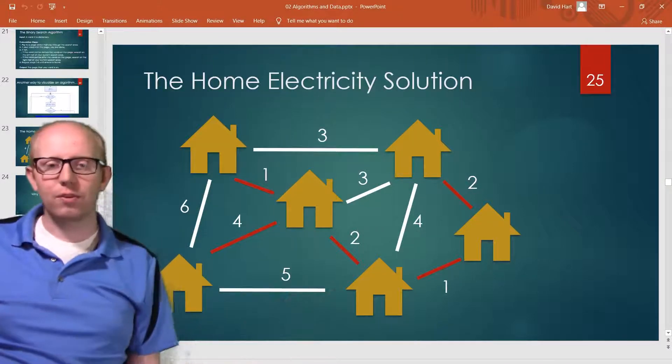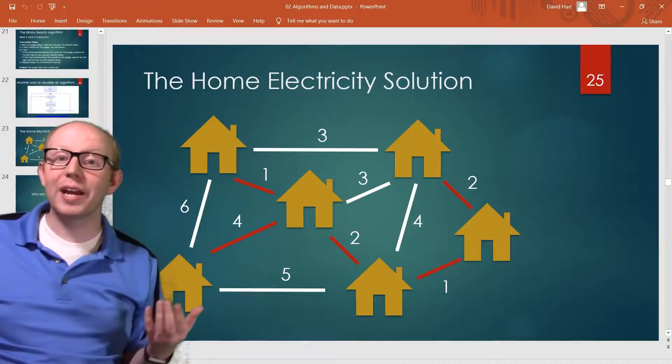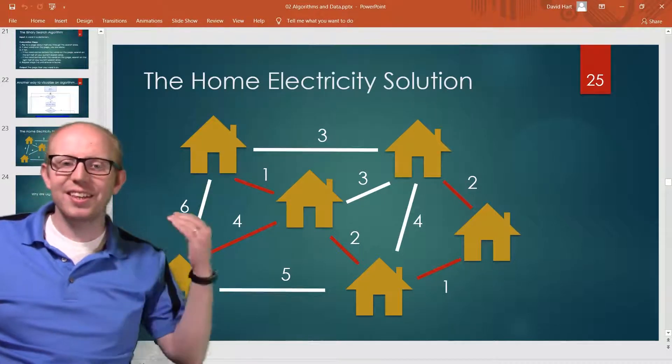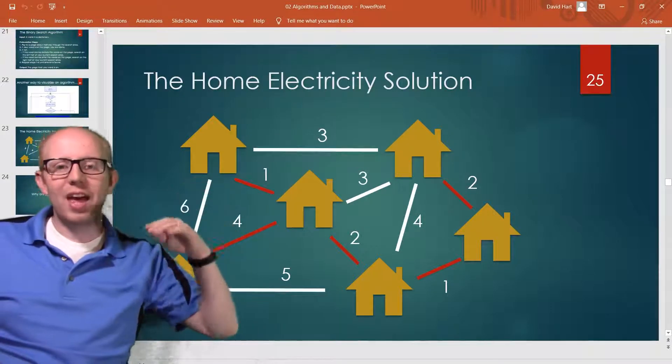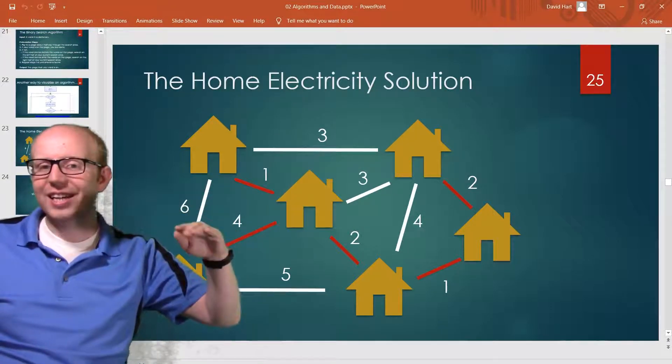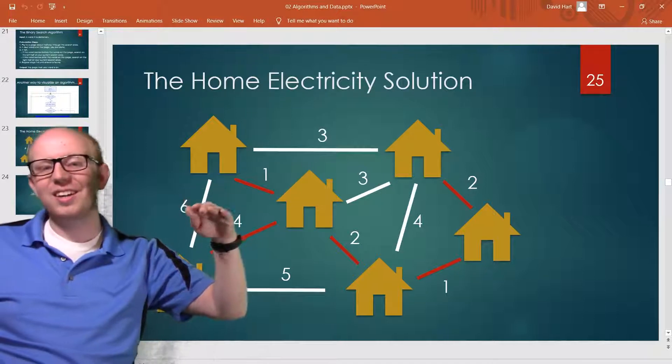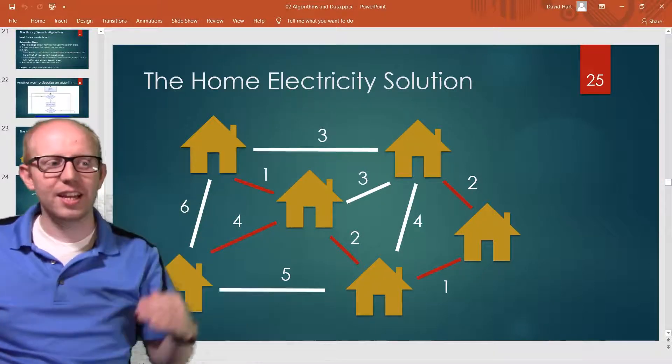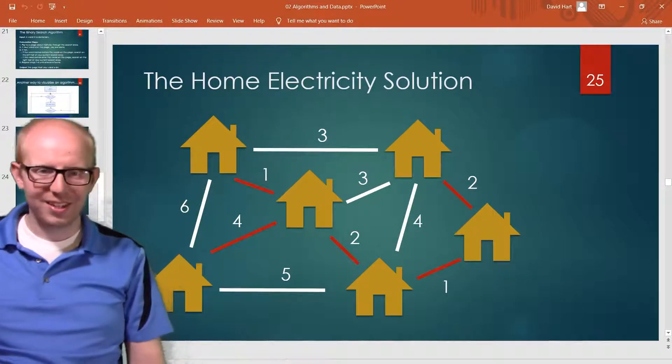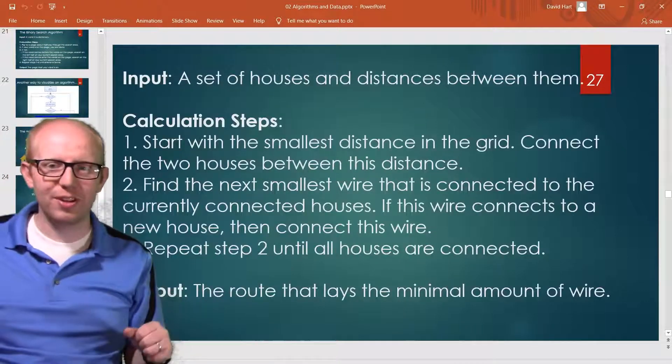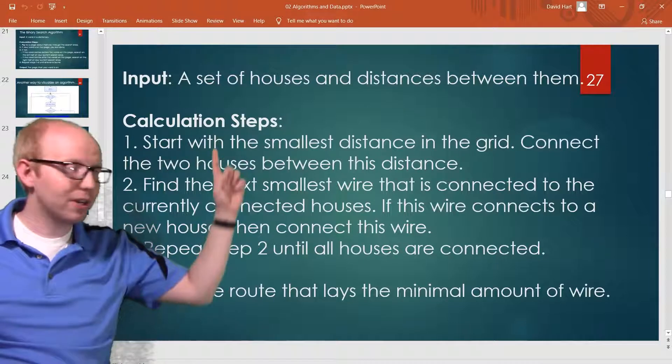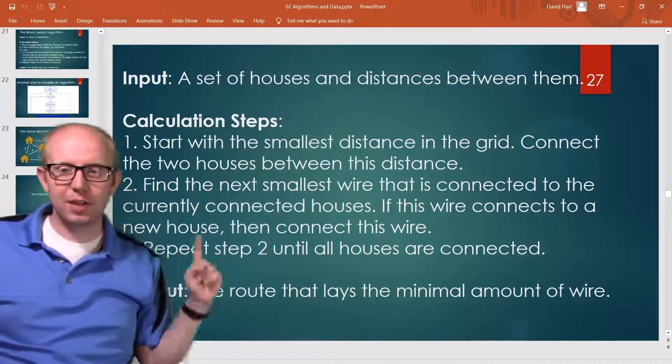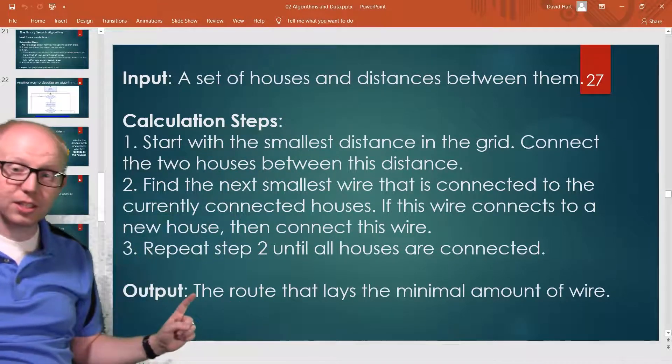So if we're making an algorithm for this, the algorithm would be add the shortest wire, then if the house is not already connected add the next shortest wire, if the house is not already connected add the next shortest wire, etc. So in full formal definition...